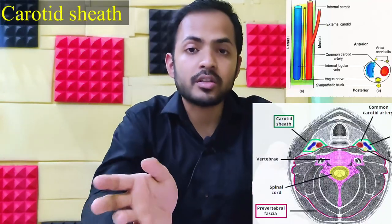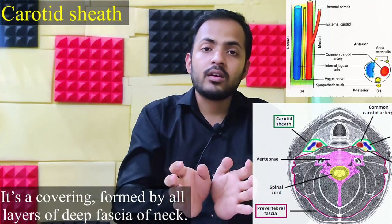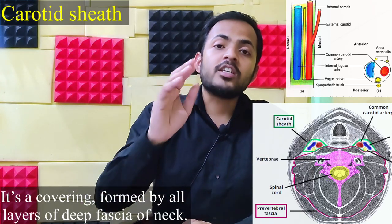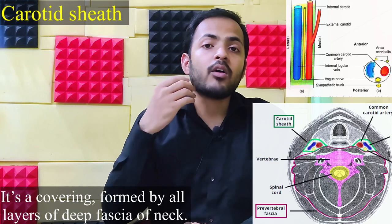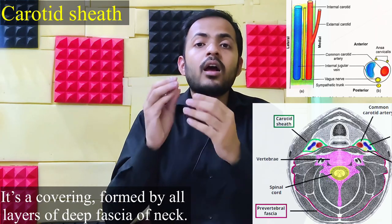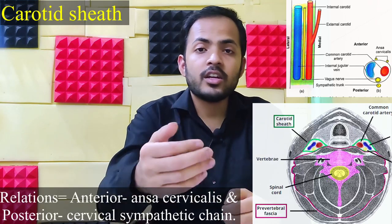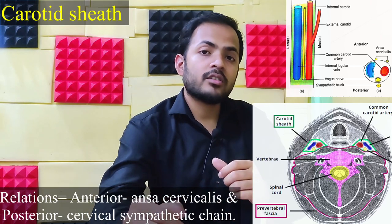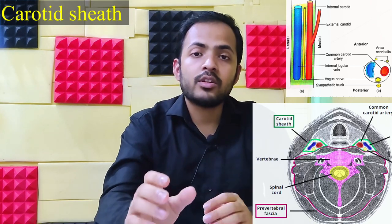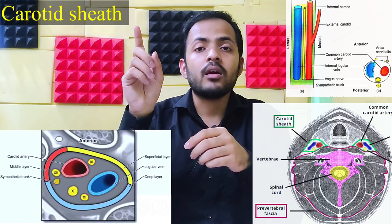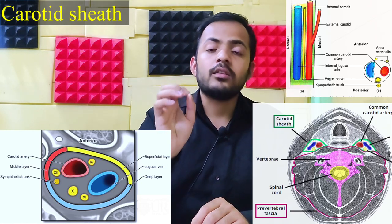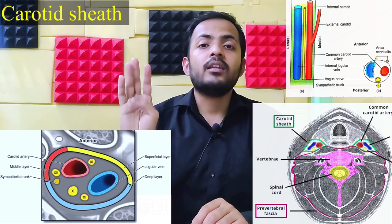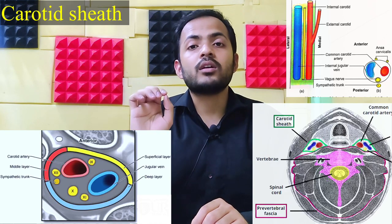An additional important structure is the carotid sheath, which is a covering formed by all five layers of the deep fascia of the neck working together. Anteriorly it is related to the ansa cervicalis, and posteriorly to the cervical sympathetic chain. The carotid sheath covers the internal jugular vein, the internal carotid artery, the common carotid artery, cranial nerves 9, 10, 11, and 12, and the cervical sympathetic chain.